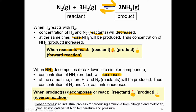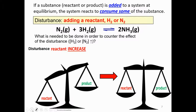The Haber process is an industrial process of producing ammonia from nitrogen and hydrogen, using iron as a catalyst at high temperature and pressure. This process is the Haber process. Now let's move on to concentration.